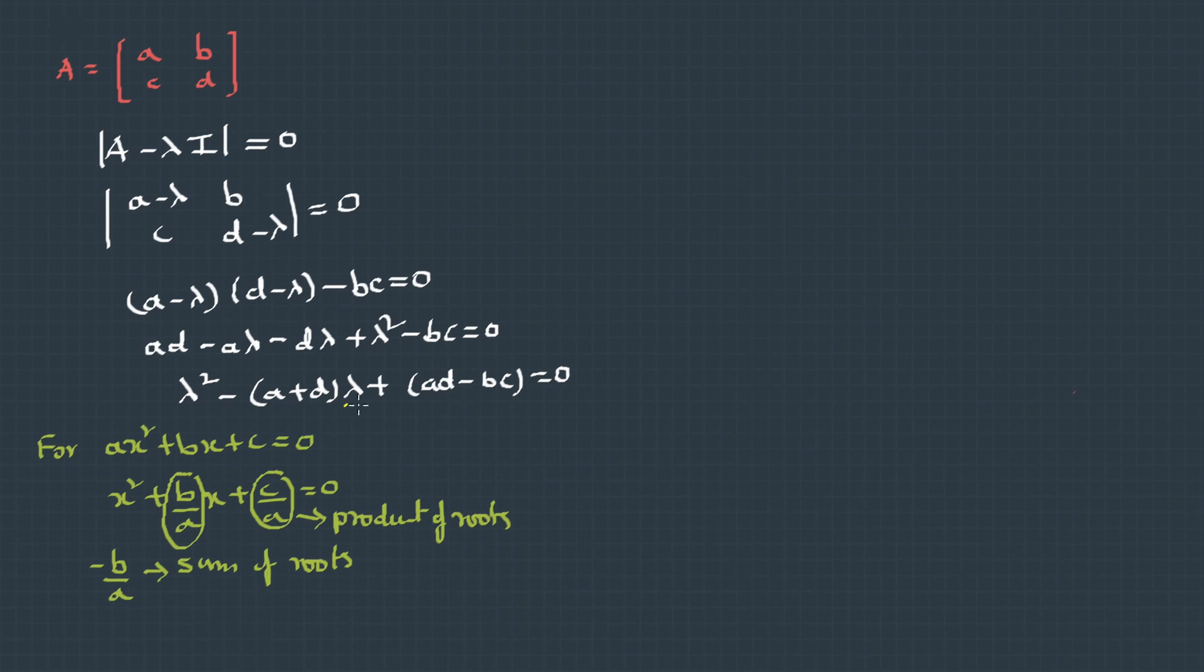Similarly, c/a is the product of roots. Now if we compare this equation with this, we can clearly make out the negative coefficient of lambda should be the sum of roots. So if the roots are lambda 1 and lambda 2, the sum of roots lambda 1 plus lambda 2 is a plus d, and the product of roots lambda 1 into lambda 2 is ad minus bc. Now sum of a and d is nothing but the trace of this matrix. Therefore, the sum of the roots is equivalent to trace of A. And ad minus bc is nothing but the determinant of A.